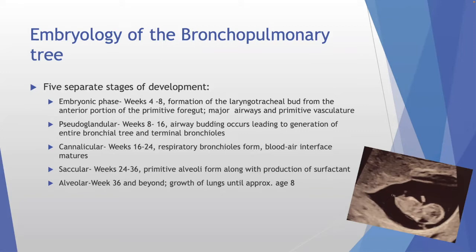In the pseudoglandular phase, airway budding forms the entire bronchial tree and terminal bronchioles. Weeks 16–18 form the respiratory bronchioles and the blood-air interface matures. Then the saccular phase produces primitive alveoli along with surfactant — relevant for premature babies, who we're now saving down to 22 weeks. The alveolar phase begins at week 36 and lung growth continues into early childhood, around age eight — which is why early lung resections are compensated well.